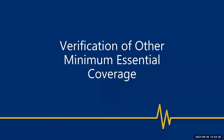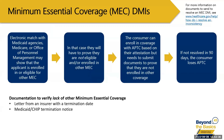There are also DMIs related to minimum essential coverage. When an electronic match with a state Medicaid agency, Medicare, or the Office of Personnel Management shows that someone applying for marketplace coverage is enrolled in or eligible for another form of minimum essential coverage, a DMI is triggered. The person can still enroll with APTC based on their attestation, but must submit documents within 90 days proving they are not enrolled in or eligible for other coverage — such as a termination letter or termination notice from a Medicaid or CHIP agency. There is no automatic extension for this type of DMI.